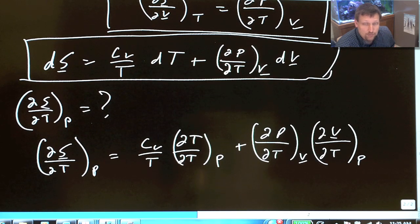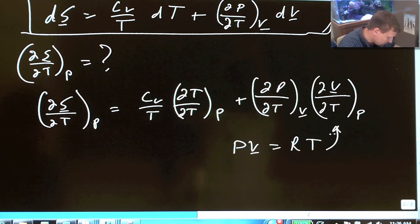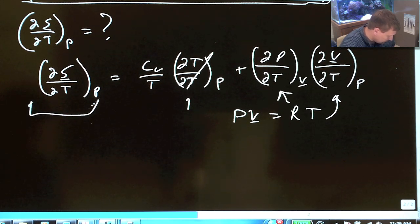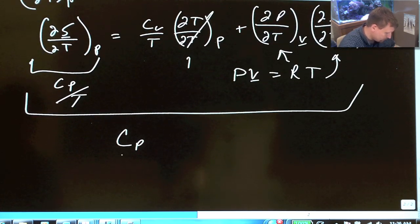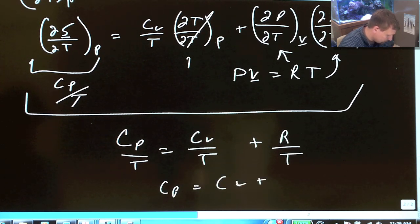So, now we're almost there. We've almost gotten through the solution. All you do now is sub in PV equals RT into this equation. Of course, by definition, del T del T is equal to 1. And notice that this equals Cp over T. What we end up with in the end is Cp over T equals Cv over T plus R over T, or Cp equals Cv plus R for ideal gas.